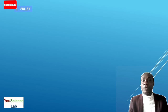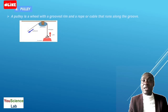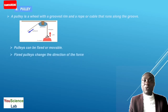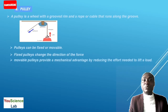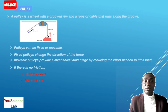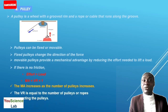The next type of machine is a pulley. A pulley is a wheel with a grooved rim and a rope or cable that runs along the groove. You can see the diagram of a single fixed pulley with the effort applied through a rope to lift a load at the other end. Pulleys can be fixed or movable. Fixed pulleys change the direction of the force, while movable pulleys provide a mechanical advantage by reducing the effort needed to lift a load. If there is no friction, the effort equals the load, and the mechanical advantage equals the velocity ratio, which equals 1. The mechanical advantage increases as the number of pulleys increases, and the velocity ratio equals the number of pulleys or ropes connecting them.